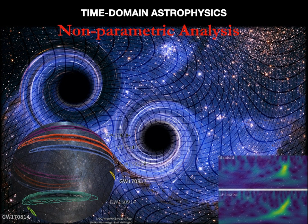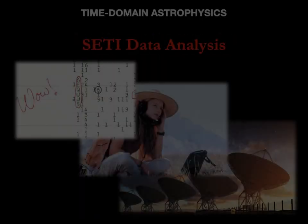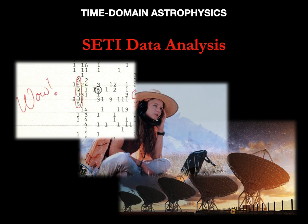Then we will move on to nonparametric analysis, a fundamental tool that finds application, for example, in the analysis of gravitational wave signals from binary black holes, or in the analysis of the anisotropies of the cosmic microwave background — the echo of the Big Bang. We will see then how big data, machine learning and intelligence systems are now essential concepts in the analysis of variable astrophysical signals. And finally, a particularly instructive case study: the analysis of the SETI signal, search for extraterrestrial intelligence. Here we see a young Jodie Foster in the film Contact, listening to radio signals coming from alien civilizations.